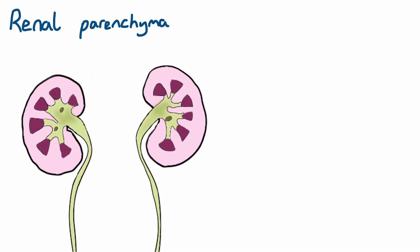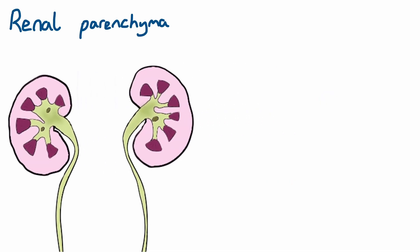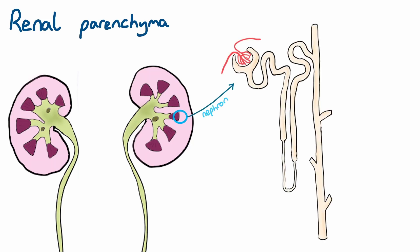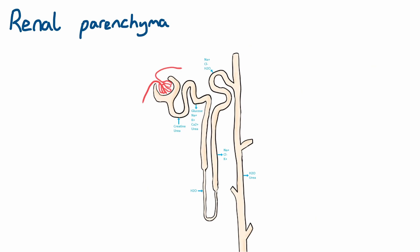Urine is formed in the nephrons of the kidneys. These are microscopic structures that span both the cortex and medulla. Each kidney has around 1 million nephrons, and in 24 hours all the nephrons in both kidneys will filter 200 litres of blood to remove waste products, maintain acid balance, regulate electrolyte levels, and maintain blood pressure. We won't go into too much depth into nephron function, as this moves into the realms of physiology, but I will give an overview of nephron microanatomy.